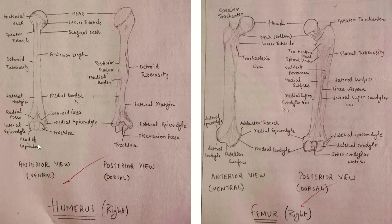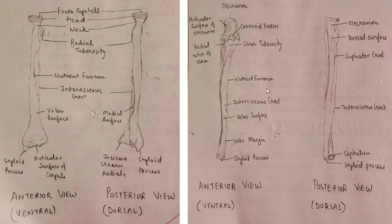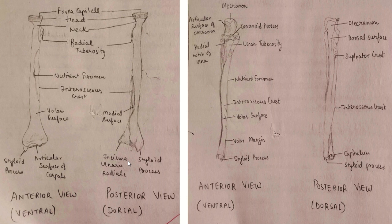Two bones are attached to the humerus — radius and ulna — and two bones are attached to the femur — tibia and fibula. For the radius: fovea capitis, head, neck, radial tuberosity, nutrient foramen, interosseous crest, volar surface, medial surface, styloid process, articular surface for carpals, incisura ulnaris radialis, and styloid process. The main features are fovea capitis, radial tuberosity, nutrient foramen, and styloid process.